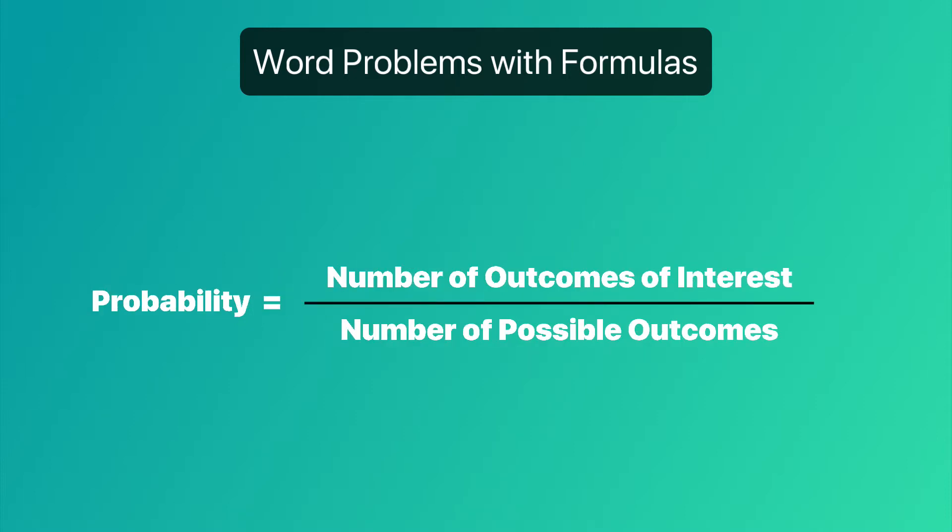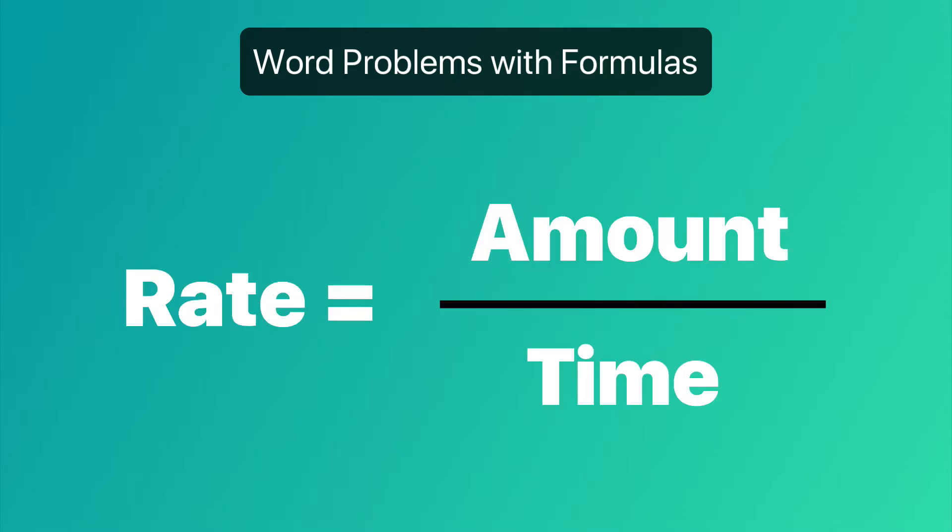Probability: number of outcomes of interest over number of possible outcomes. Rate: amount or distance over time.